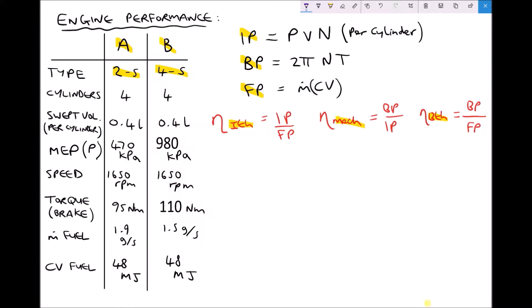So let's begin by calculating our indicated power. The reason it's called indicated power is because it can be taken from something called an indicated diagram, which looks at the changes in pressure in the cylinder throughout the cycle. To calculate the indicated power we need: the mean effective pressure, the swept volume of the cylinder multiplied by the number of cylinders to get the total indicated power, and finally the speed in revolutions per second — our quoted values are in revolutions per minute so we must convert.